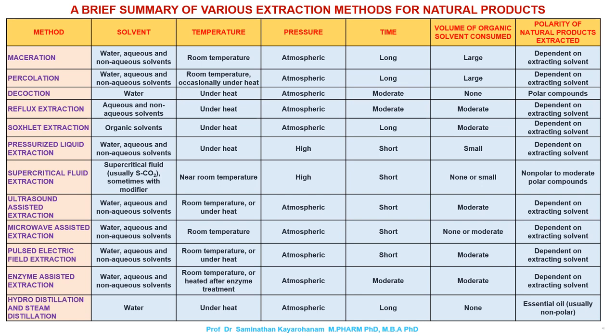A brief summary of various extraction methods for natural products, comparing method, solvent, temperature, pressure, time, volume of organic solvent consumed, and polarity of natural products extracted. Maceration: aqueous and non-aqueous solvents, room temperature, atmospheric pressure, long time, large solvent volume, polarity dependent on solvent. Percolation: aqueous and non-aqueous solvents, room temperature (occasionally under heat), atmospheric, long, large, polarity dependent on solvent. Decoction: water, under heat, atmospheric, moderate time, no solvent, polar compounds. Reflux extraction: aqueous and non-aqueous solvents, under heat, atmospheric, moderate time, moderate volume, polarity dependent on solvent.